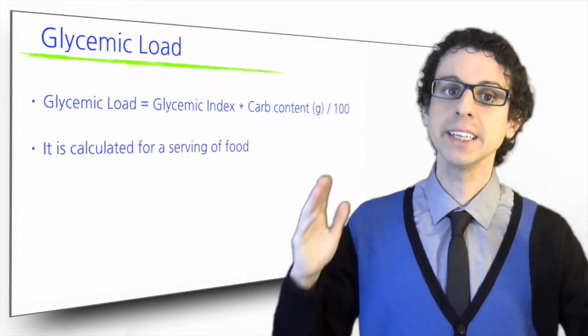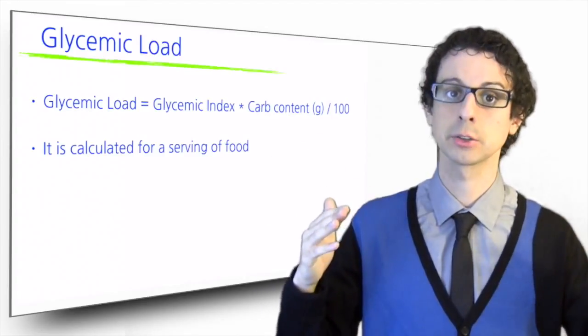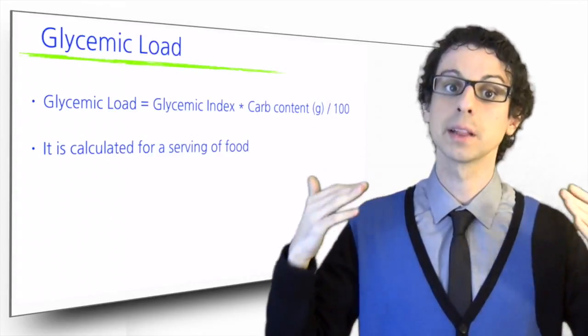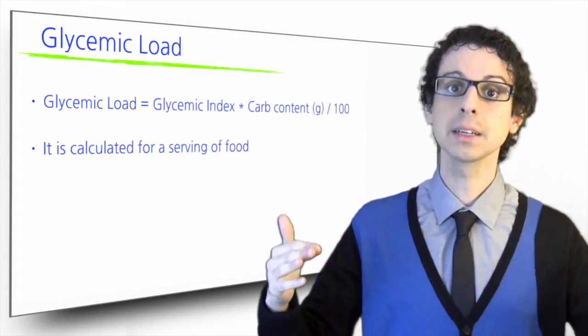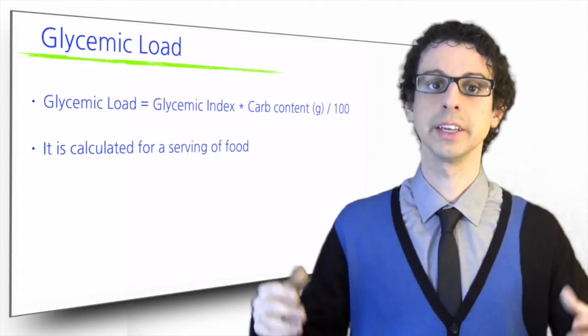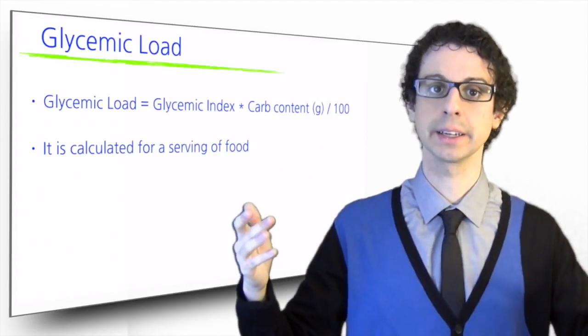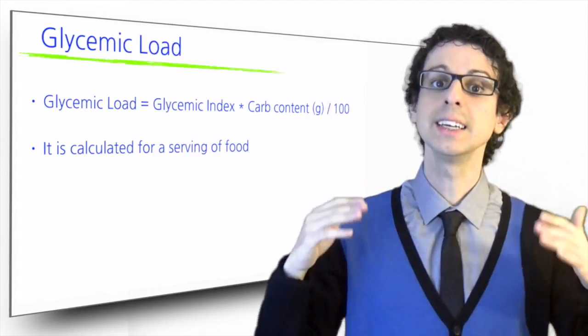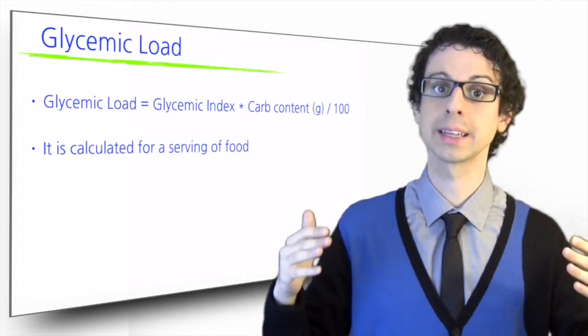This way, you have an index that considers both factors. If a food has a low GI, but a lot of sugars, its glycemic load will still be high. Conversely, if it has a high glycemic index, but very few sugars, its glycemic load will still be relatively low.